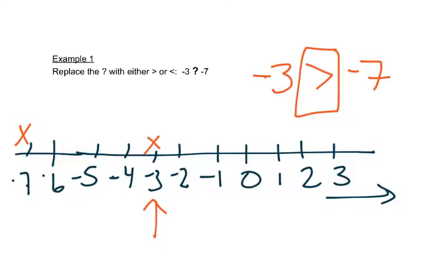Negative three is bigger because if you think about like money, this would be owing three dollars and owing seven dollars. Owing three dollars is closer to having money, so that's bigger.